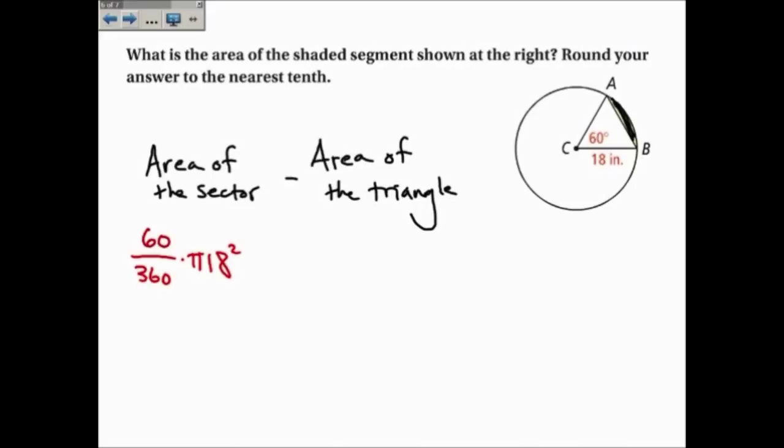Now, since they asked me to round my answer to the nearest tenth, they're not asking for it in terms of pi. So I'm going to plug in everything, including the pi. So 60 divided by 360 times pi times 18 squared is 169.65 inches squared.